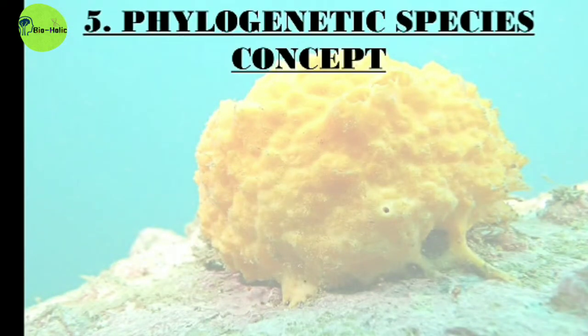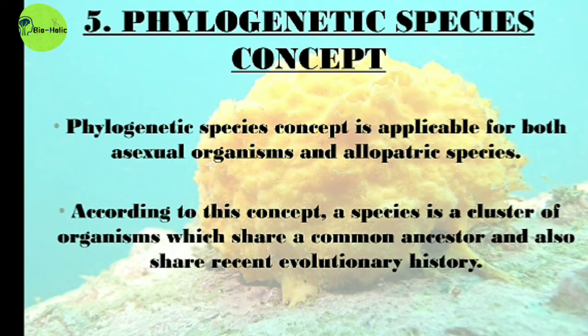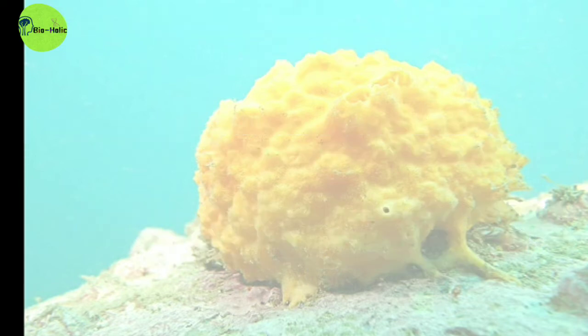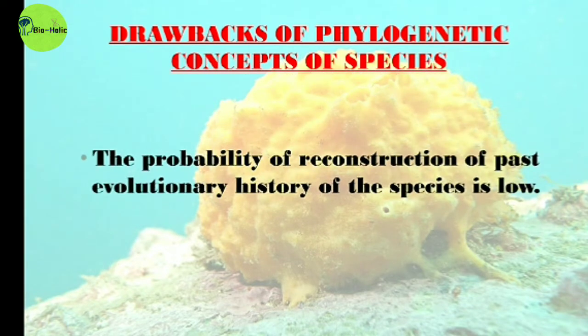The Phylogenetic Species Concept is applicable for both asexual organisms and allopatric species. According to this concept, a species is a cluster of organisms sharing a common ancestor and a recent evolutionary history. The drawback is that the probability of reconstructing the past evolutionary history of these species is very low.